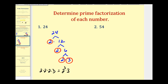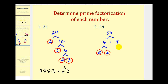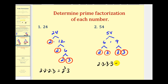Let's go ahead and find the prime factorization of fifty-four. Two factors of fifty-four would be six times nine. Neither of those are prime, so we'll keep breaking these down. Six would be two times three — both of those are prime. And then nine would be three times three, which are also prime. So the prime factorization of fifty-four is two times three times three times three, which is the same as two times three to the third power.